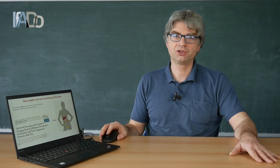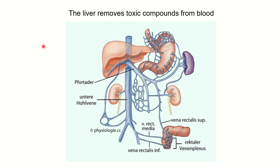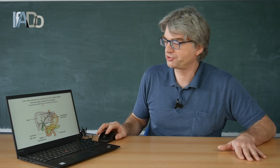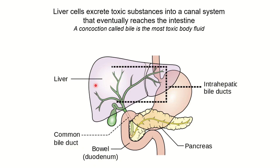Why is the liver important? One of its essential functions is to remove toxic substances, to which we are exposed in our everyday life, from the blood. Everything we eat reaches the stomach and the intestine, and substances may be absorbed into these blood vessels. Blood then has to enter the liver before it passes to the general circulation. Liver cells extract toxic substances from the blood and excrete them into this channel system, which finally drains into the intestine.